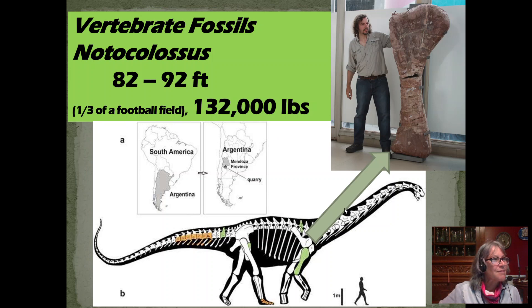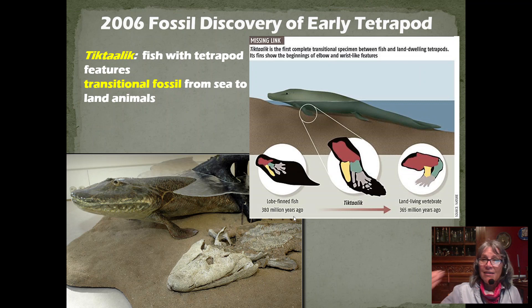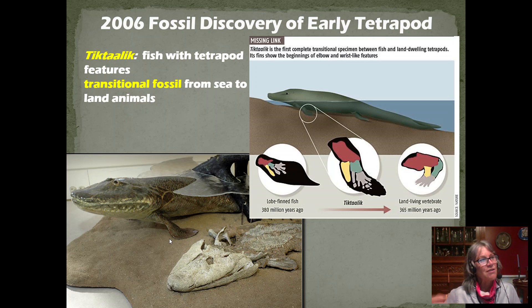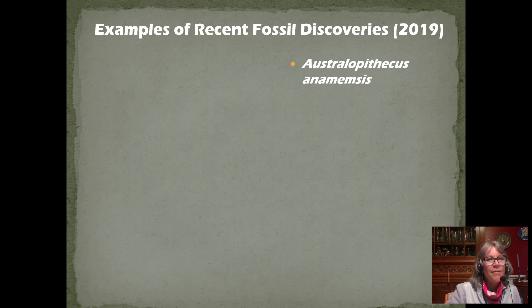We also have vertebrate fossils. We can see the range of a dinosaur species and where it was found — and the comparison gives you some idea of how big this animal was. The fossil record is incomplete because not everything can be fossilized; you need a certain set of conditions to create a fossil, and we continue to discover new ones. Here's an early tetrapod — the Tiktaalik was a fish with tetrapod features, fins kind of modified into a walking structure. It's a transitional fossil moving from sea to land, the first transitional specimen between fish and a land-dwelling tetrapod, with elbow-like features.